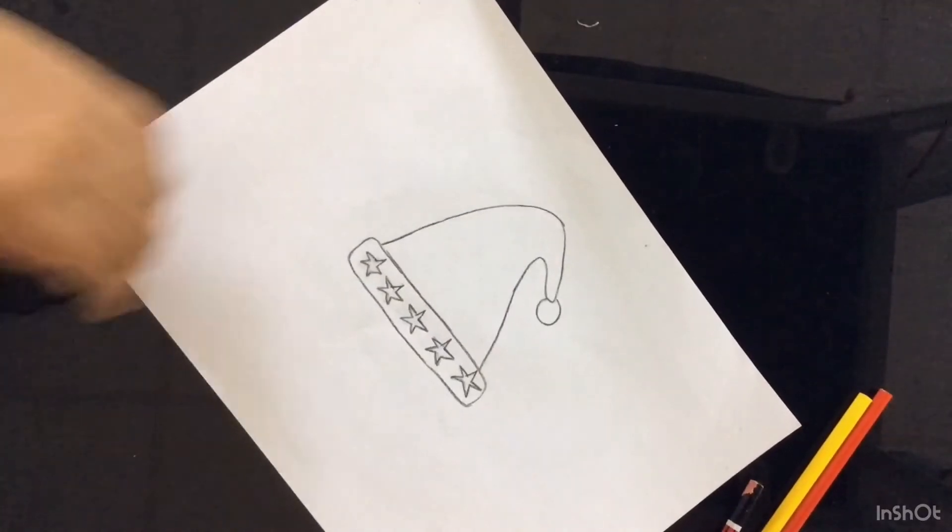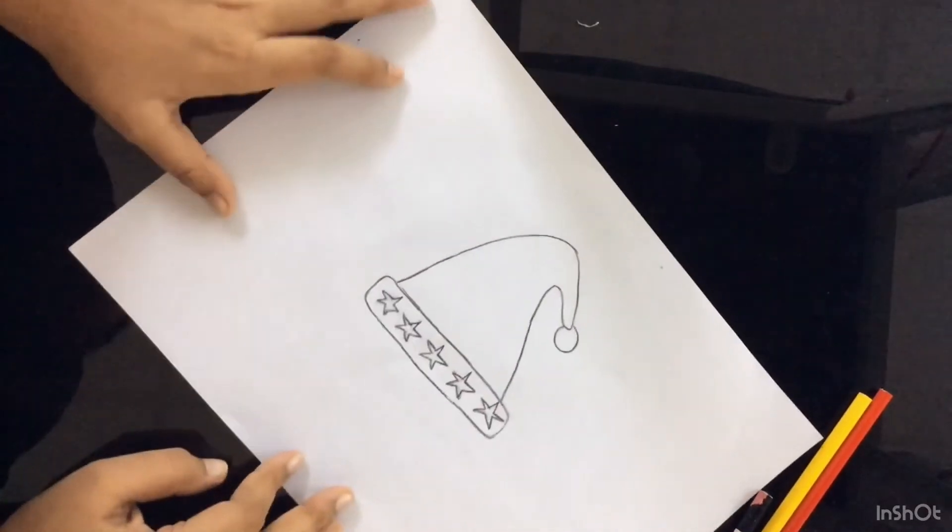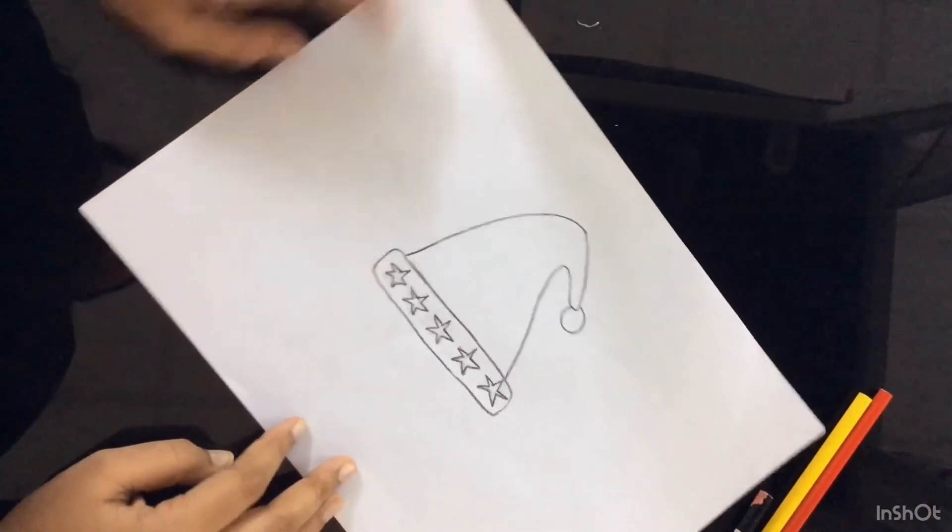Finished outlining with the black color pencil and I also have erased the pencil line. Now we can color on this.